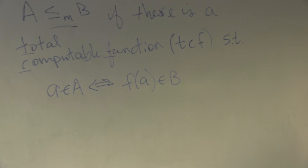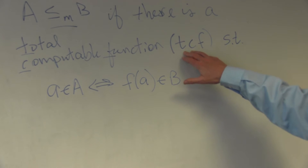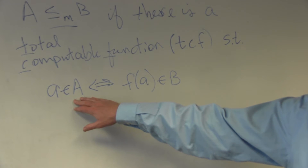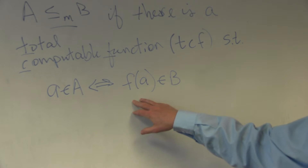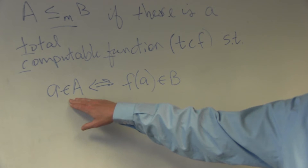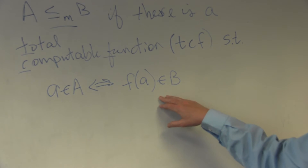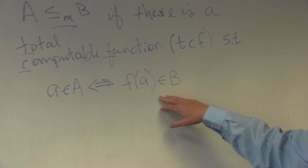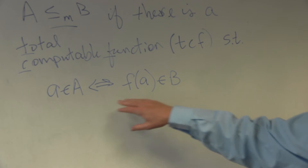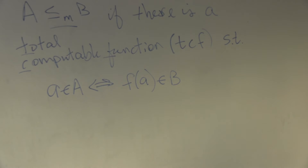The way to think about mapping reductions is that there's a mapping reduction between two sets if you can build a total computable function that takes you from one set to the other. If you give it something that's not in the one set, it gives you something that's not in the other set — it always preserves membership. Let's talk about what a total computable function is.